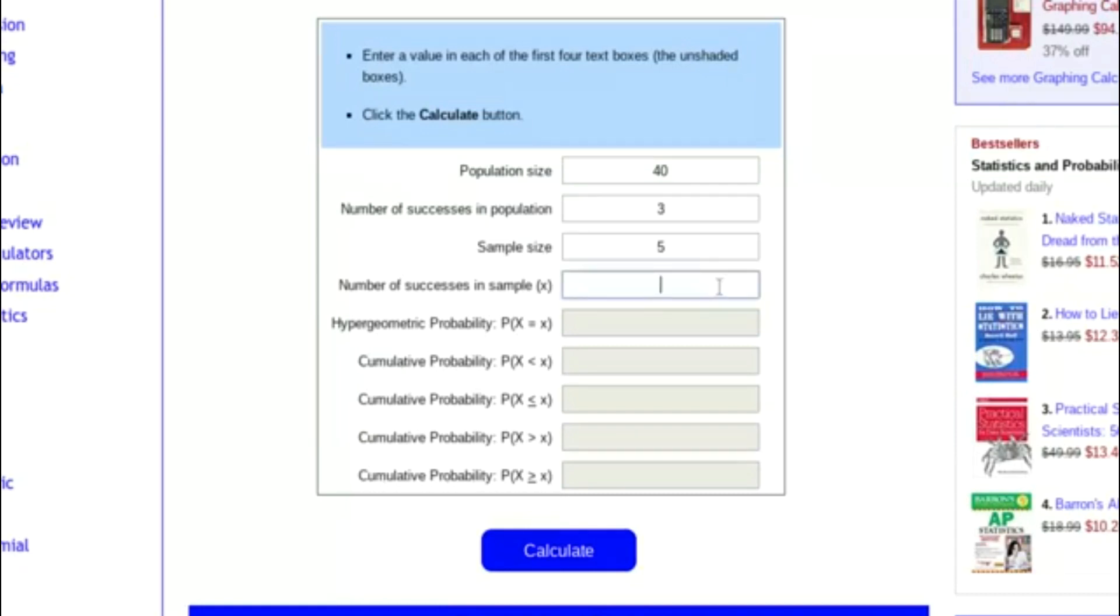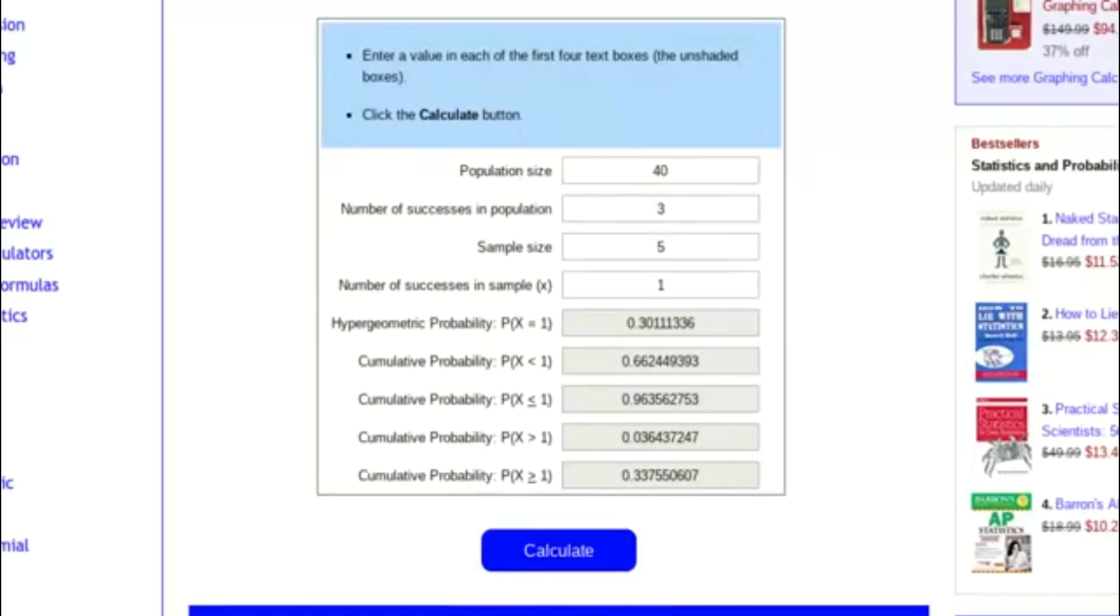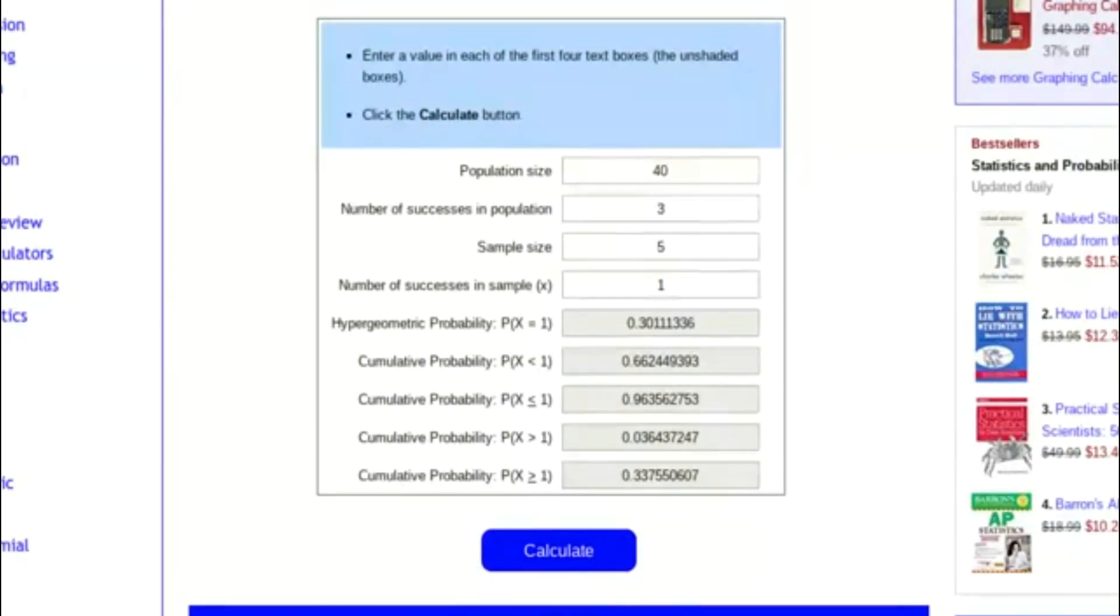And so you want to know the chances of opening one copy of that card that you have three of in your hand. So you plug all these numbers in, you hit calculate, and the number you're most interested in is the cumulative probability where x is greater than or equal to one. This will tell you how often you will have at least one copy of this card in your hand, and the answer is 33.75 percent. So on average, a little bit better than one-third of the time you will open one copy of that three-of in your opening hand in a 40 card deck.